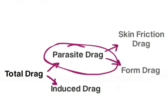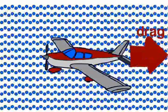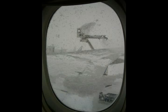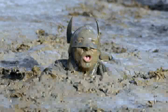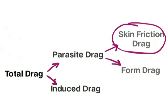Parasite drag is increased with an increase of speed, as more air particles are being moved around, absorbing more energy. It is also increased if the flaps or the wonderfully aerodynamic landing gear are deployed. If the airframe has any contamination on it, such as mud, ice, or snow, this will increase skin friction drag as well.